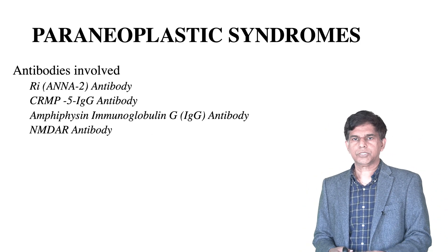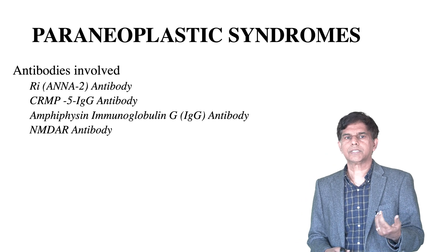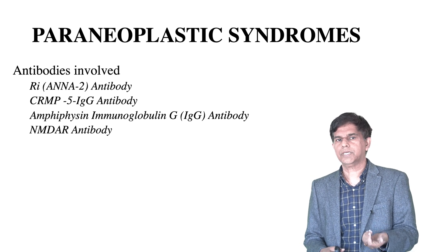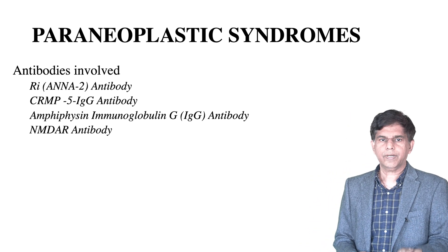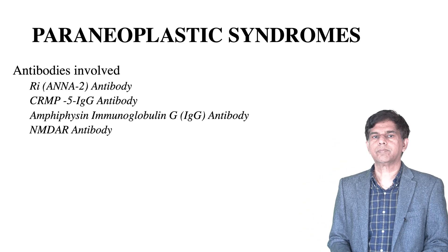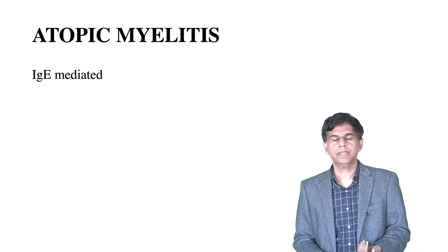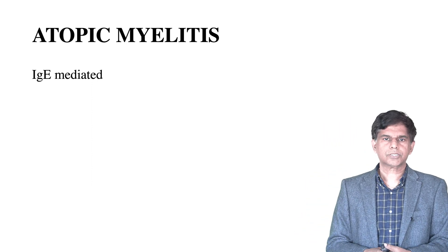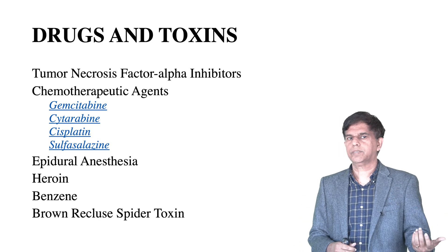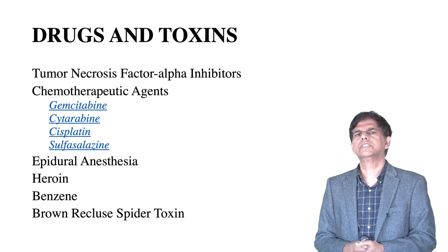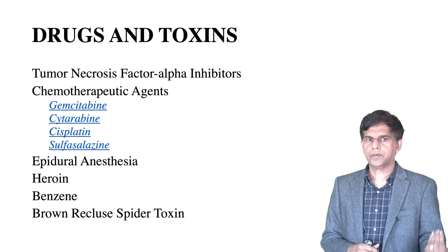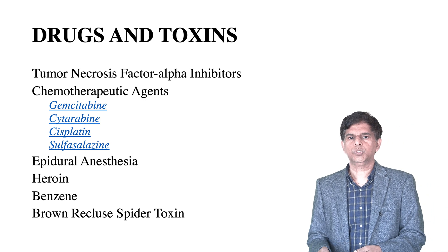Paraneoplastic syndrome is also a cause; relevant antibodies include Ri, ANNA-2, CRMP-5 IgG, antiphysin IgG, and NMDA-R antibodies. Atopic myelitis, which is IgE-mediated, is another cause. Drugs and toxins include tumor necrosis factor alpha inhibitors, chemotherapeutic agents such as gemcitabine, cytarabine, cisplatin, and sulfasalazine, epidural anesthesia, heroin, benzene, and brown recluse spider toxin.